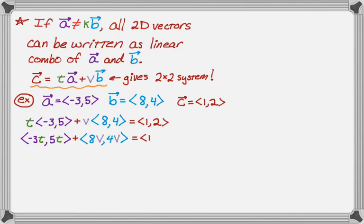So I end up with this and then I'm going to keep cleaning up the left-hand side. Once you've done a couple of these, you pretty much skip all of these steps. So I'm going to add corresponding components. So I end up with a vector negative three T plus eight V and then five T plus four V. And then this still equals one, two. And if two vectors are equal, then their corresponding components are equal. So that gives me two equations.